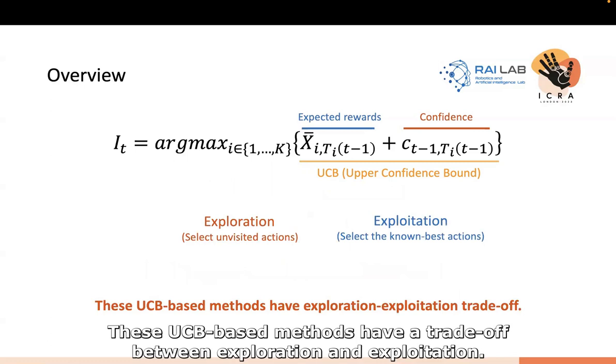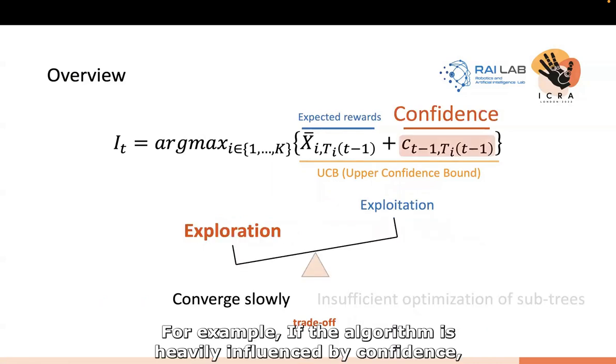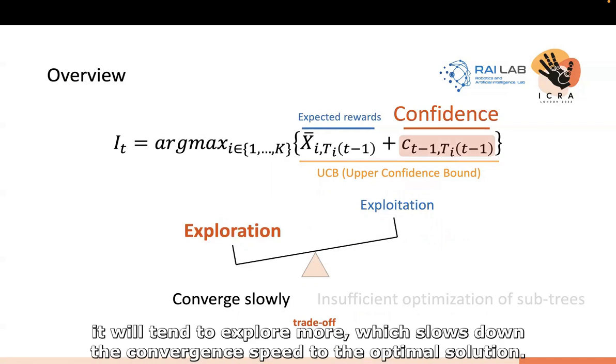These UCB-based methods have a trade-off between exploration and exploitation. For example, if the algorithm is heavily influenced by confidence, it will tend to explore more, which slows down the convergence speed to the optimal solution.